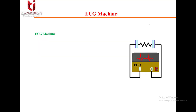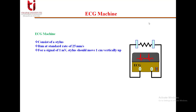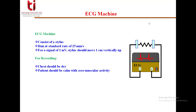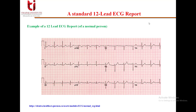For the recording part of the ECG signal, the ECG machine uses a stylus that runs at a standard rate of 25 mm per second. For a signal of 1 mV, the stylus should move 1 cm vertically. For recording, the chest should be dry and the patient should be calm with zero muscular activity; otherwise, it will contribute to artifact.